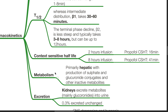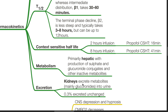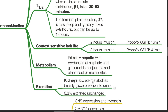Propofol is primarily metabolized in the liver with production of sulfates and glucuronide conjugates and other inactive metabolites. The kidneys excrete these metabolites, mainly glucuronides, into the urine, and only 0.3% of propofol is excreted unchanged.